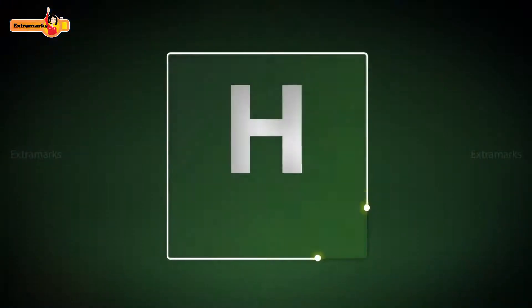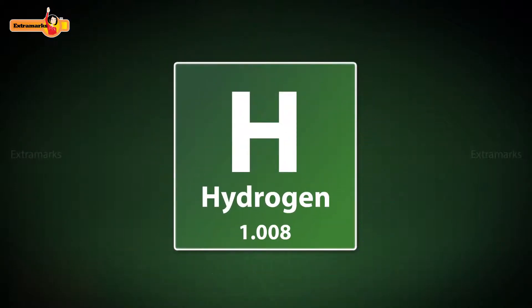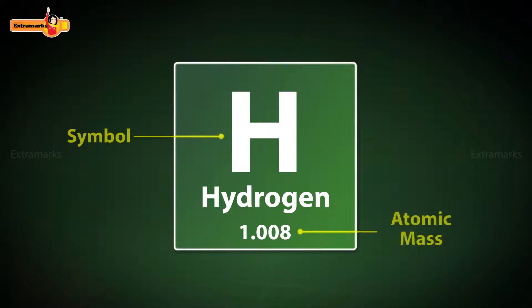Every element has a unique symbol and atomic mass. For example, the symbol and atomic mass of hydrogen are H and 1.008 respectively.